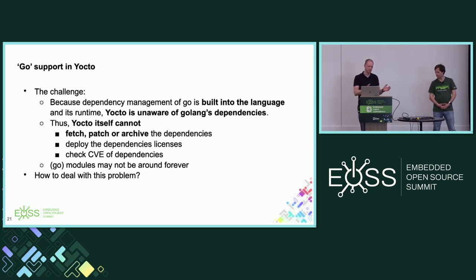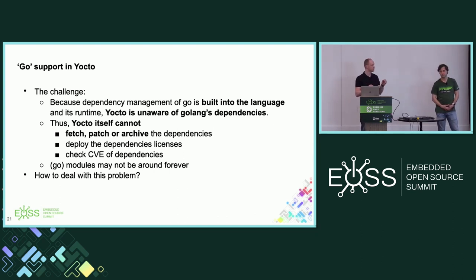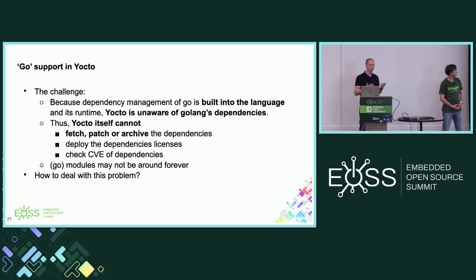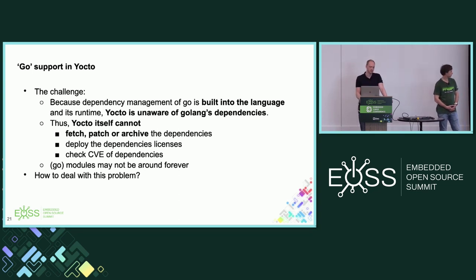So what is challenging about marrying Go's dependency handling via go.mod with Yocto's approach? As shown before, dependency handling in Yocto uses DEPENDS and RDEPENDS statements — this doesn't work with Go. Yocto doesn't understand your go.mod file and is completely unaware of your application's dependencies. So it cannot fetch, patch, or archive dependencies, cannot patch security holes in dependencies, and cannot discover licenses of your dependencies. Also, embedded projects can be around for 10 or 20 years, and those internet modules may not be available then.